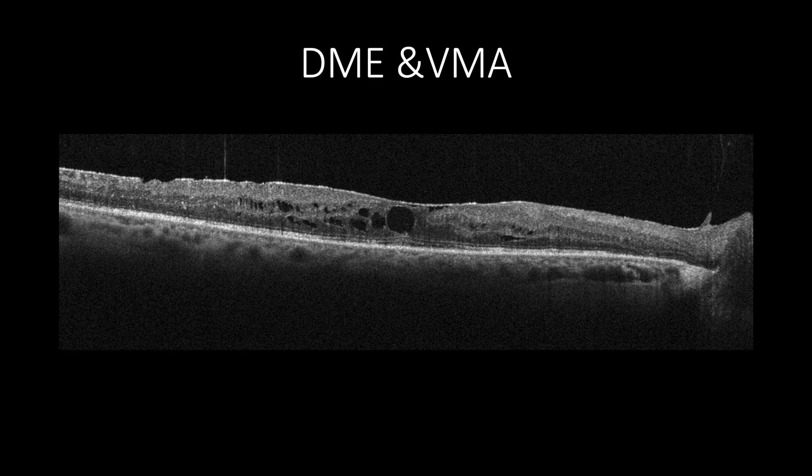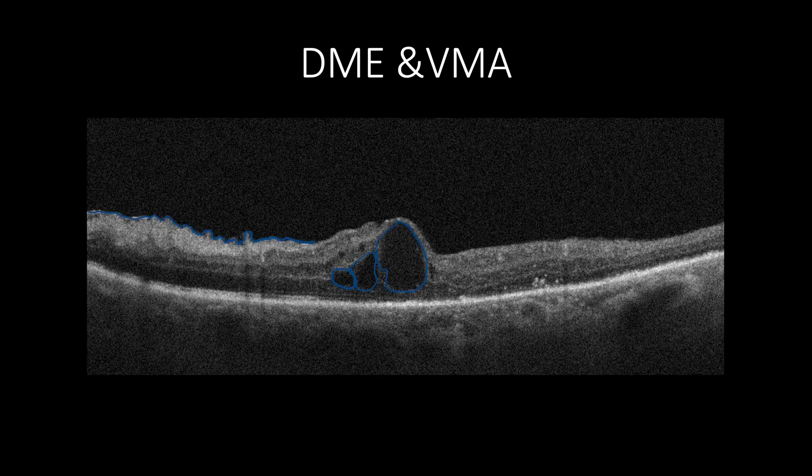It is important to rule out vascular elements that contribute in inducing macular edema in cases presented with vitromacular interface abnormalities, by using fluorescein angiography to rule out leaking microaneurysms. As in this case, there is an epiretinal membrane that does not cause distortion or corrugation of inner retinal tissue, but there are intraretinal cystic changes. In this case, fluorescein angiography may reveal leaking microaneurysms. Both traction and vascular elements induce some types of diabetic macular edema, as treating the vascular element itself may only reduce edema partially, while the rest of the edema may require surgical intervention by performing pars plana vitrectomy.